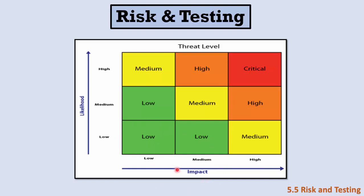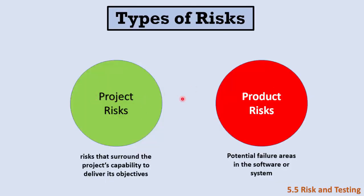A low risk has a low priority. If we have a medium impact and medium likelihood, this is a medium risk. If the impact is high and the likelihood is high, this is a critical risk. The threat is high and we have to implement a mitigation strategy to face this risk. We divide risks into two types: project risks and product risks.